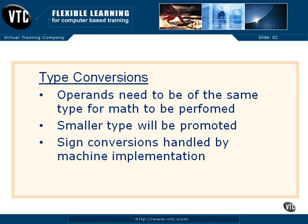So what happens is something called type conversion. The operands on either side of an operation need to be of the same type for the math to be performed properly. Then the result, as it is assigned into the left side of the equation, needs to be typed properly so that it fits into the resulting area. Generally speaking, smaller types like characters will be promoted to ints, ints will be promoted to longs, and so on up the chain until you get up to doubles.